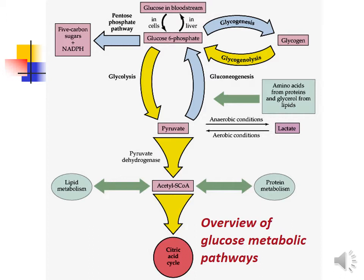Conversion of pyruvate back to glucose in reverse glycogenesis is known as the gluconeogenic pathway. Pyruvate is converted to acetyl-CoA by pyruvate dehydrogenase enzyme. Acetyl-CoA is further oxidized via the TCA cycle in the mitochondria to provide more ATP. Acetyl-CoA is also used to synthesize fatty acids, ketone bodies, and cholesterol. In anaerobic conditions, pyruvate is converted to lactate.